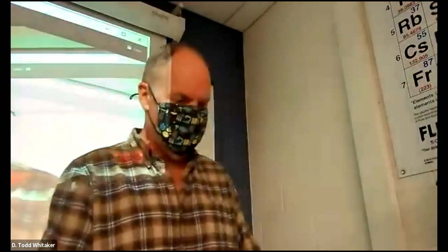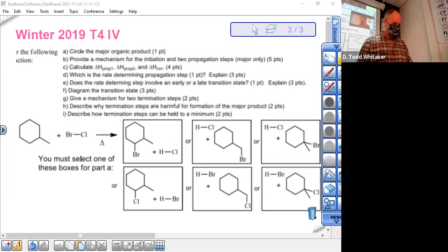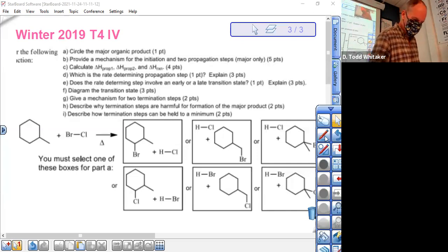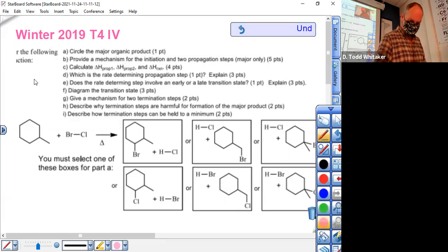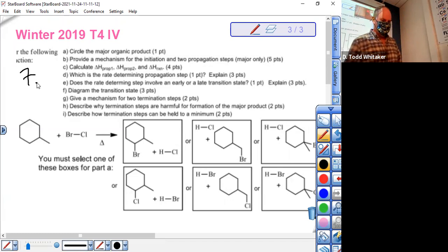All right, we have a request for Winter 19, Test 4, Part 4, Question 7. That did not show up on the copy. And you will have a page just like this, with this many points exactly.